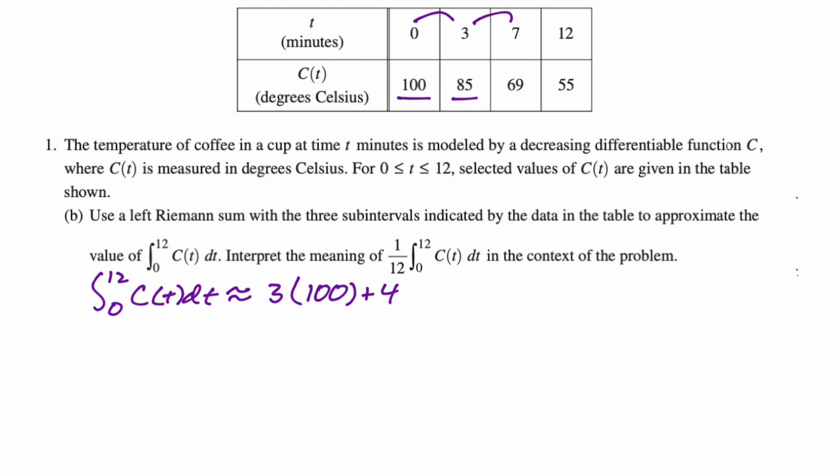And then plus from 3 to 7 is 4. And the left endpoint is 85. So times 85. And then from 7 to 12 is 5. And then the left endpoint is at 69. And we could actually leave that, but it's calculator, so I'm going to do it. But also, you should definitely leave it. So I got 985.